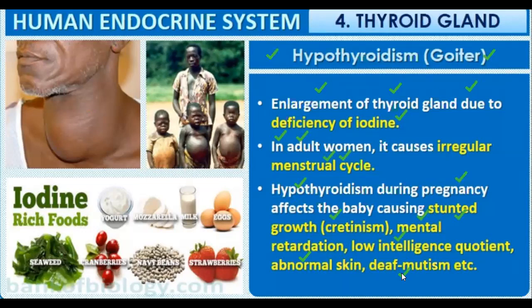To avoid this iodine-deficiency disease, we should consume iodine-rich foods such as yogurt, mozzarella cheese, milk, eggs, seaweed, cranberries, navy beans, and strawberries. Hypothyroidism means thyroid hormones are reduced, metabolism is reduced, and even though we eat properly, we cannot metabolize energy properly. This can be treated with iodine supplementation.